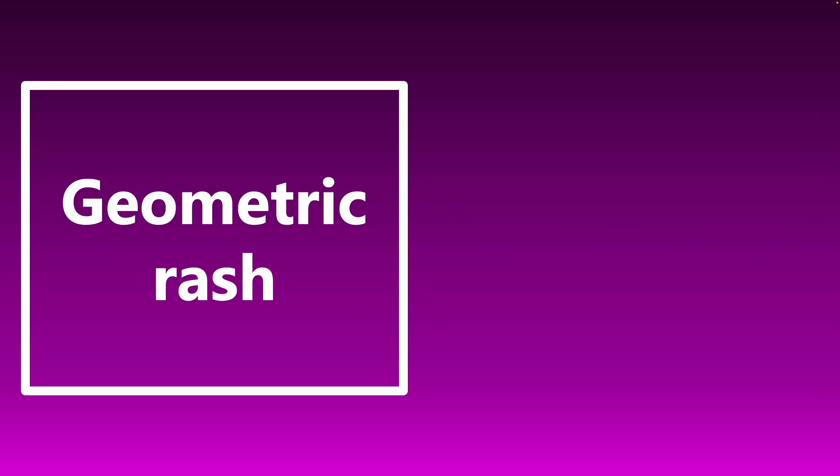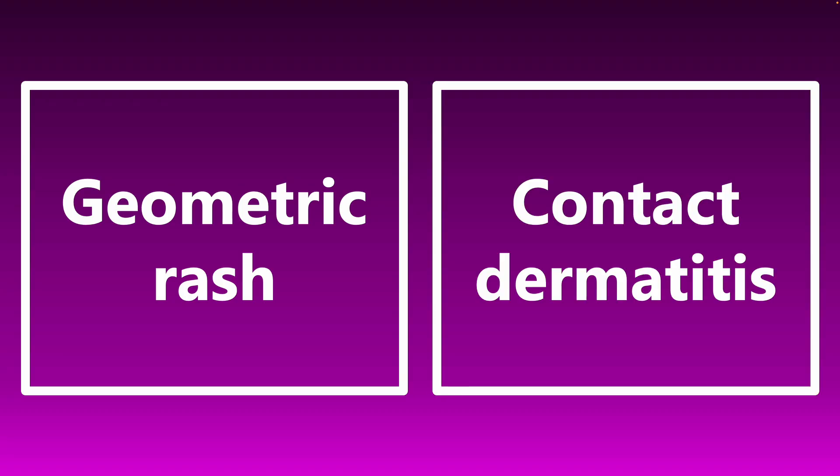A geometric rash — if you see something like this, your mind should immediately jump to contact dermatitis. The classic boards description is a patient wearing a bracelet, necklace, or pendant, and they have a rash in the shape of that piece of jewelry. If you see a geometric rash, think contact dermatitis.